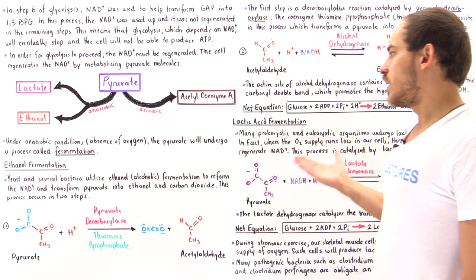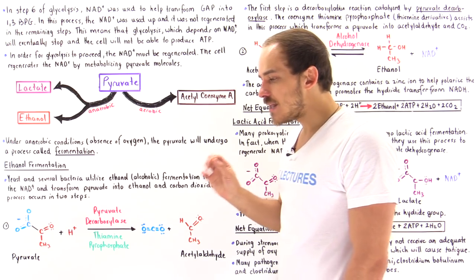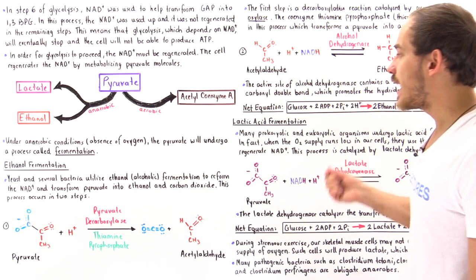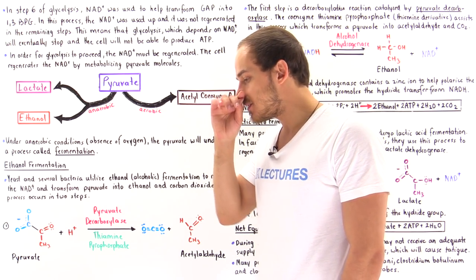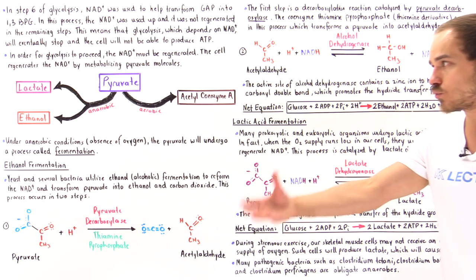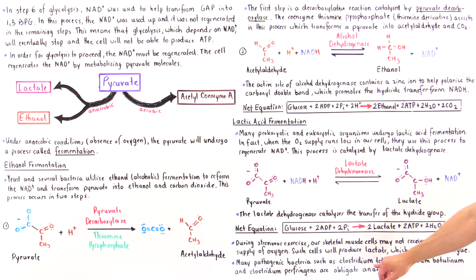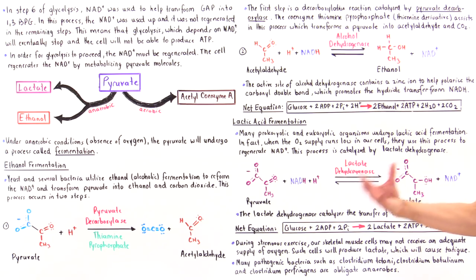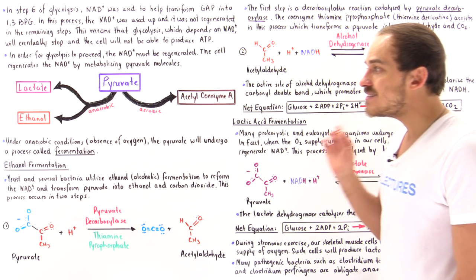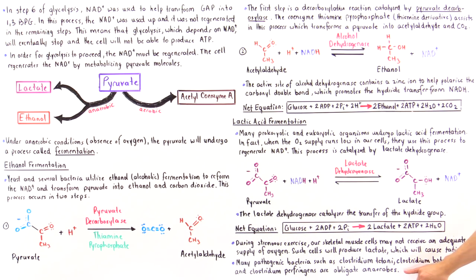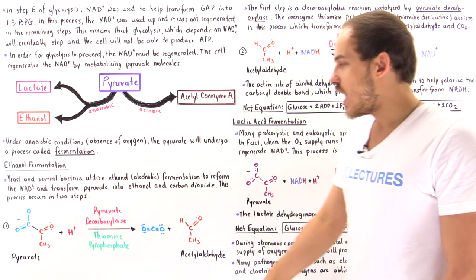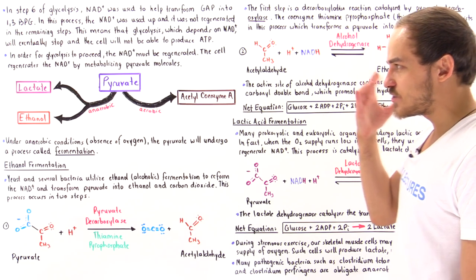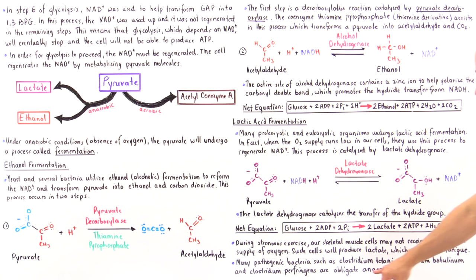Our cells are not the only ones that utilize lactic acid fermentation — many bacterial cells that infect our body also use it. Three important bacterial species that use lactic acid fermentation to generate ATP are: Clostridium tetani, which causes tetanus (lockjaw) in humans; Clostridium botulinum, the most toxic bacterium in the world, which also causes botulism and is used in the cosmetic procedure known as Botox; and Clostridium perfringens, which causes gangrene in wounds and cuts.